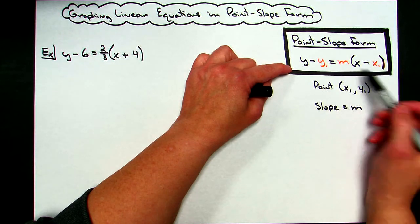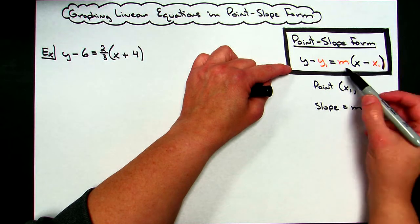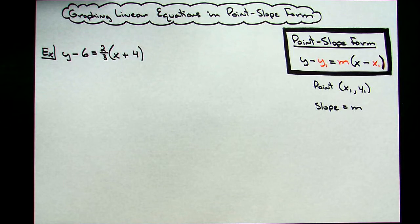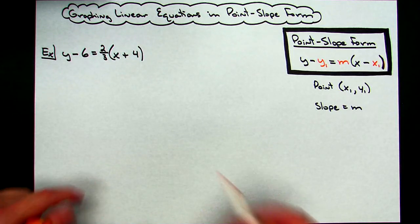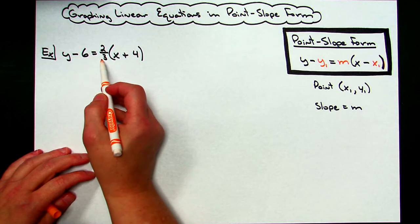From point-slope form, we can easily find a random point that is on the line. We can also look at the slope, and that's going to help us graph the equation. For my first example, I've got y minus 6 equals 2 thirds times the quantity x plus 4.